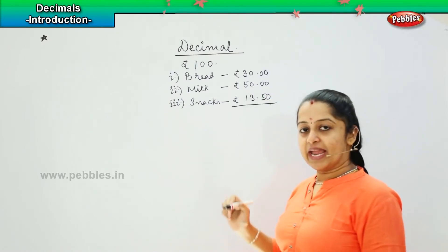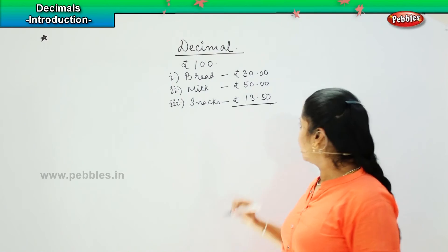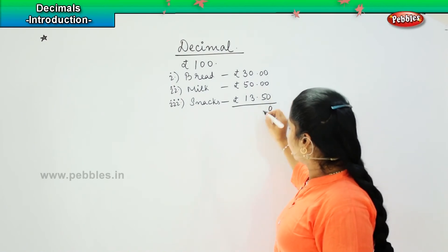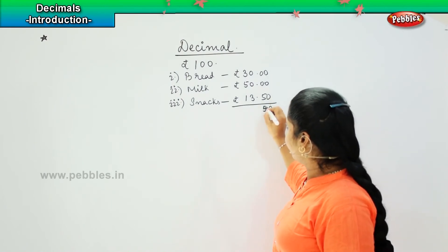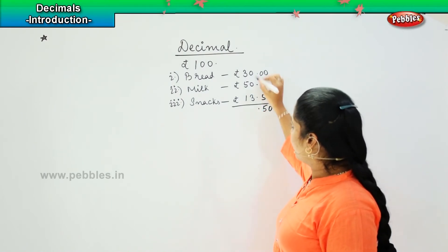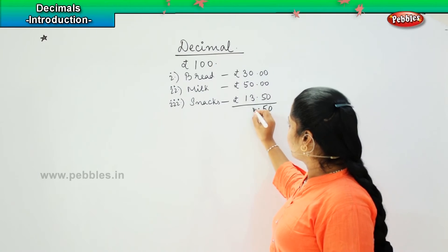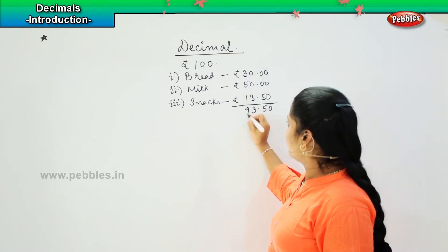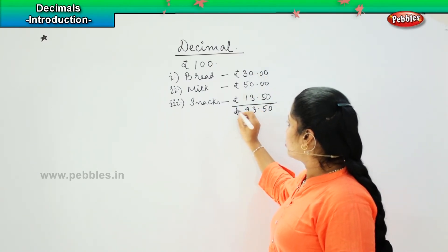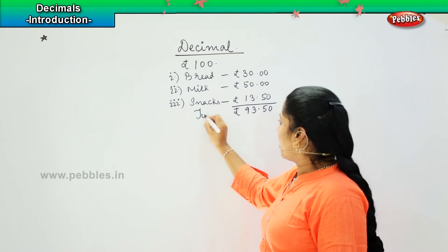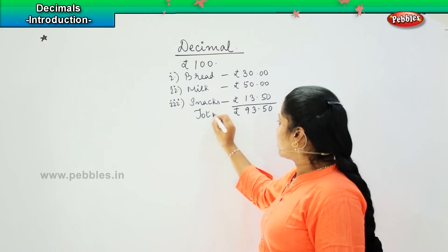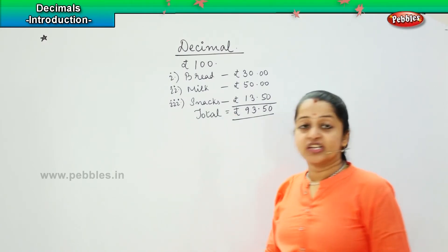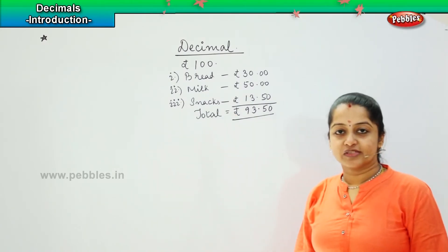Shall we add all together? This will be zero, here it will be five, I put a zero. Then three, three plus five is eight, eight plus one is nine. So the total amount which I have to give to the shopkeeper is ninety three point five zero.